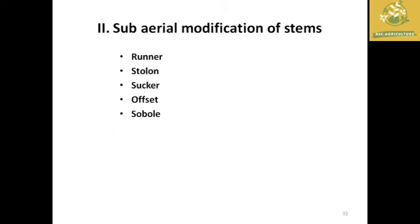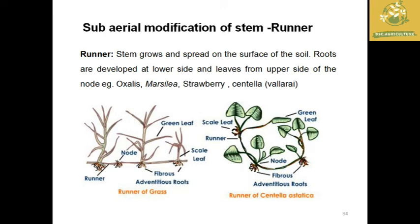The second classification is sub-aerial stem modifications: runners, stolons, offsets, and suckers. Runners travel along the soil surface — the lower surface develops roots and the upper portion forms leaves; examples: Oxalis and strawberry.